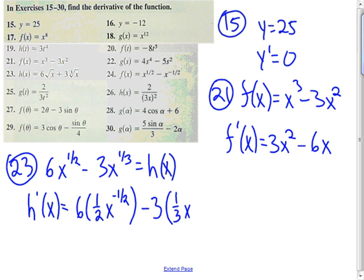And then we'll say minus three times, and then the derivative of x to the one-third is one-third x to the... and when we take one-third and subtract three-thirds, which is the same thing as one, I get negative two-thirds.